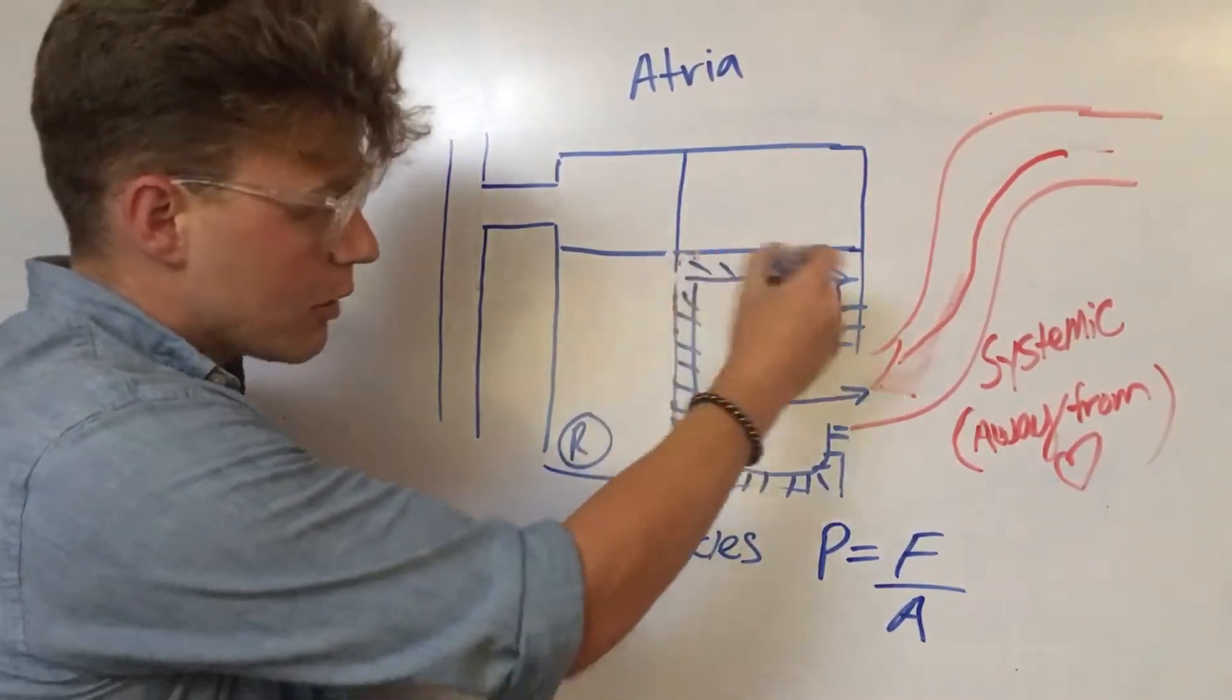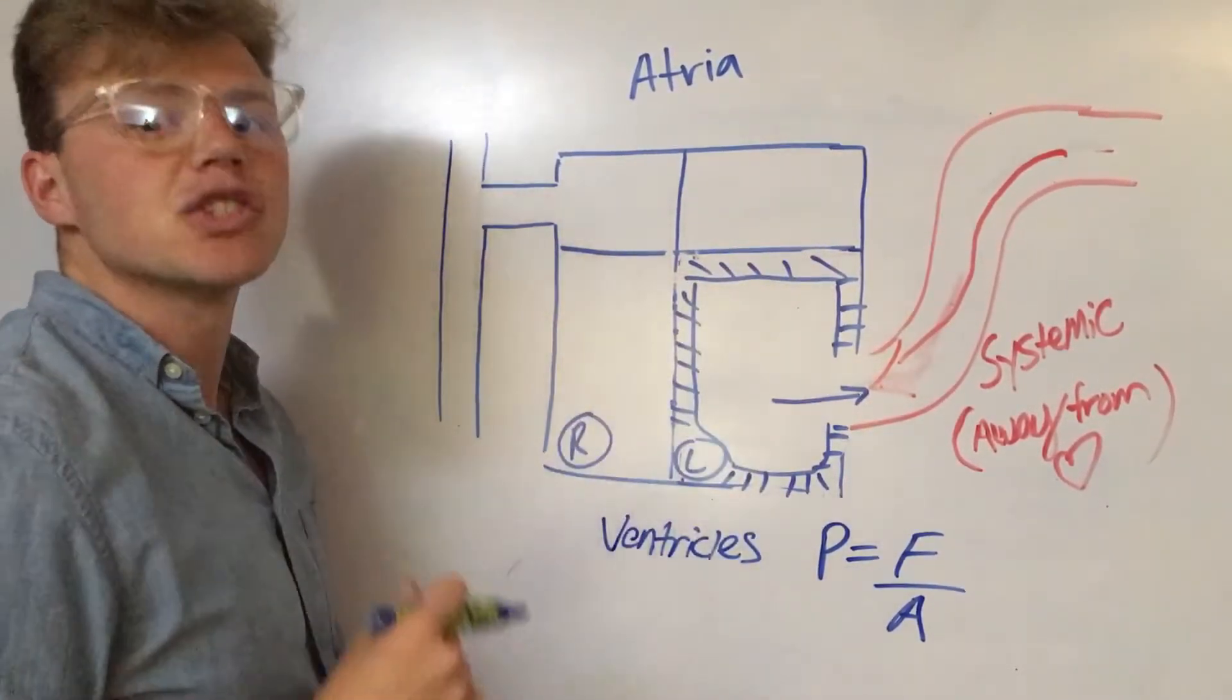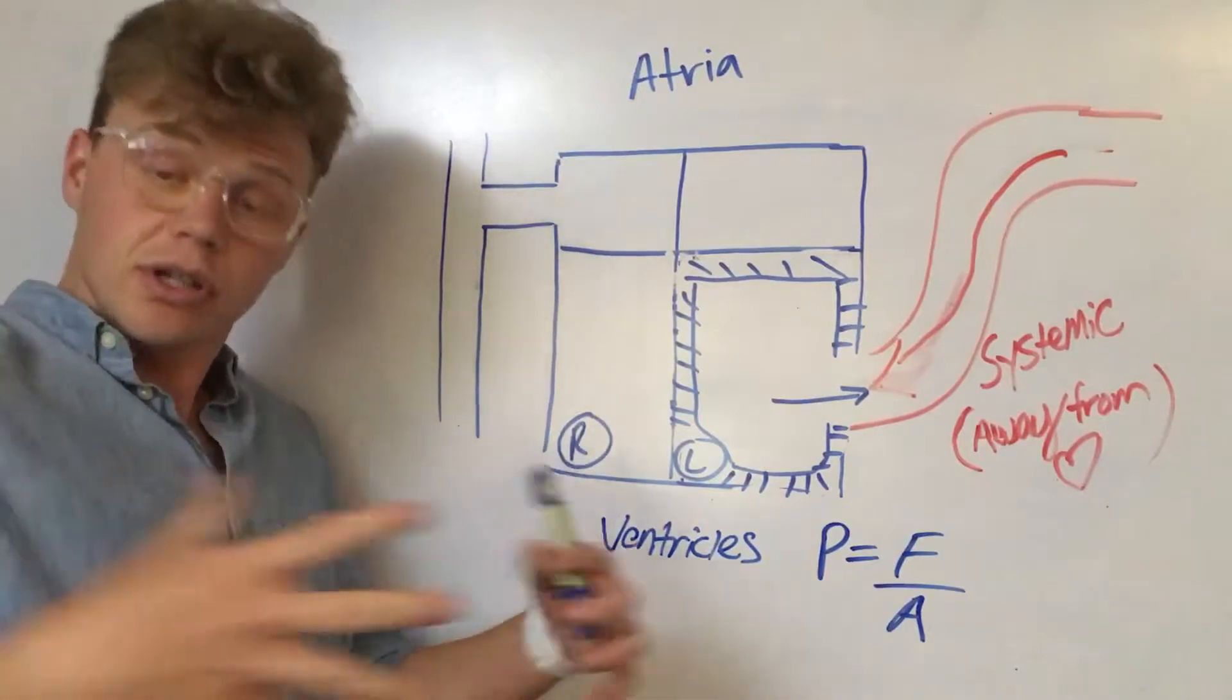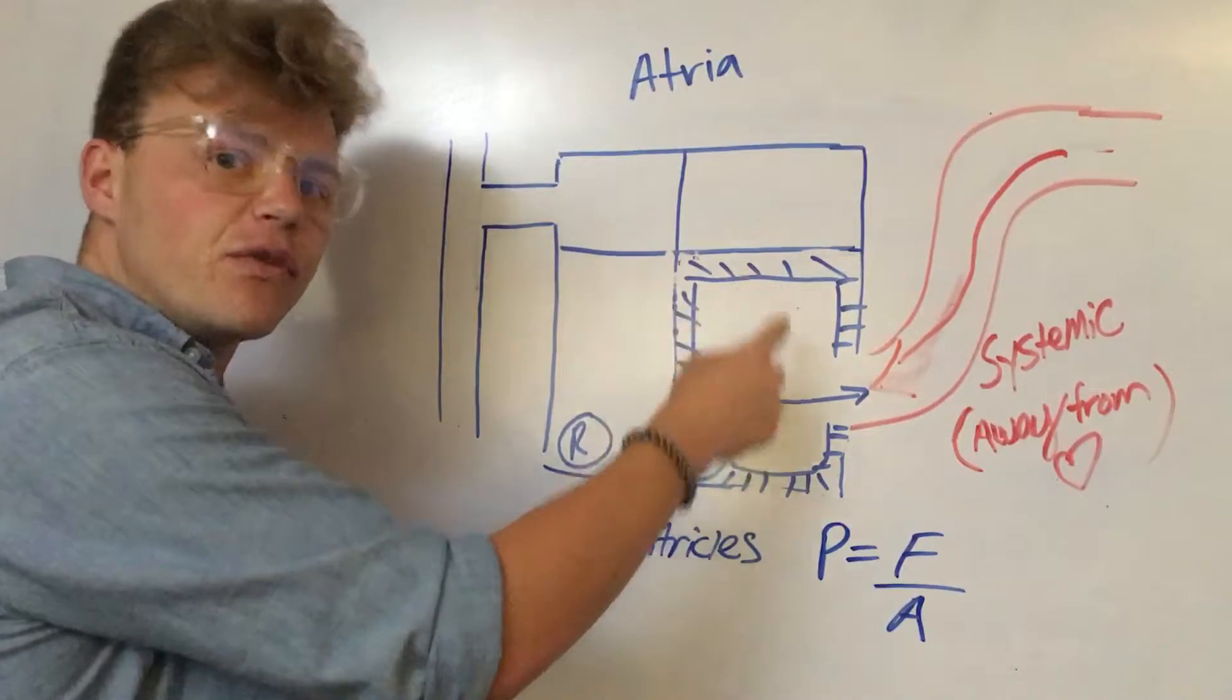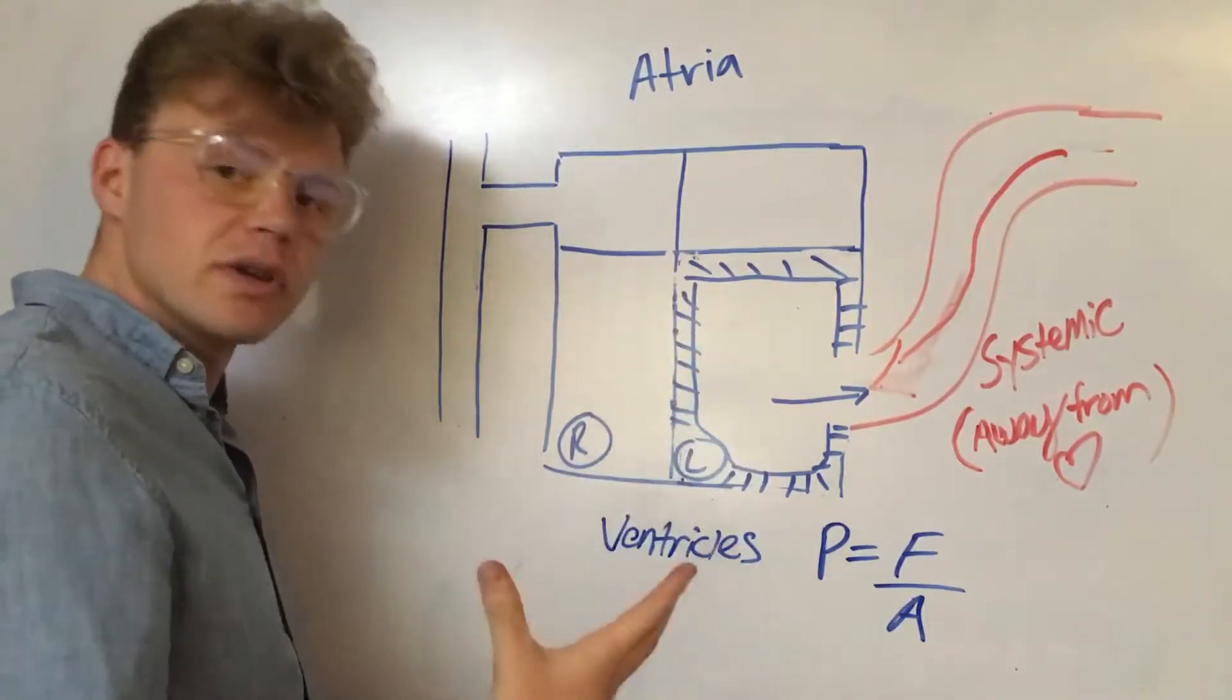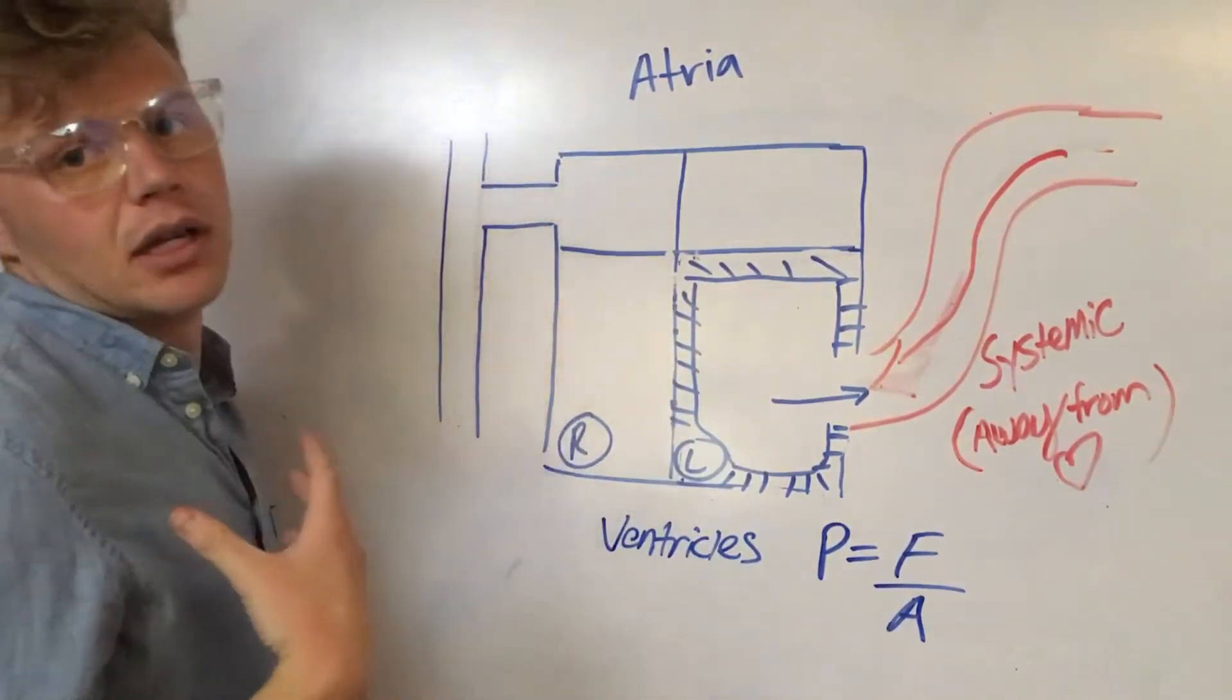You have a smaller chamber because you're laying down more cross bridges. You're making that muscle bigger in order to generate more force. But the surface area, the volume in your left ventricle decreases. That is not good.